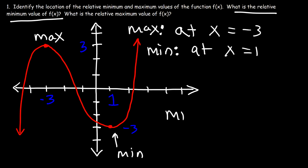So the relative minimum value, that's equal to the y value that corresponds to that point. So that's negative 3. And the relative maximum value is the y value that corresponds to that point, which is positive 3.